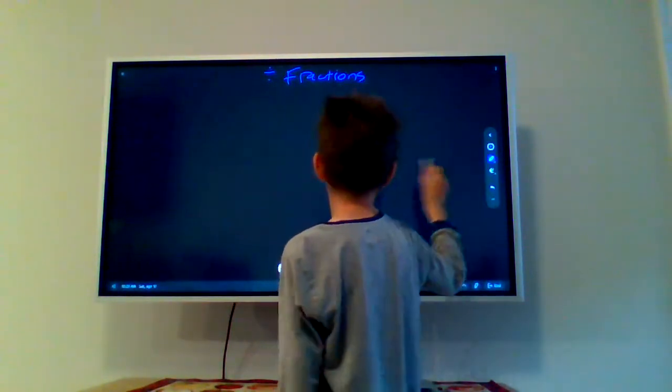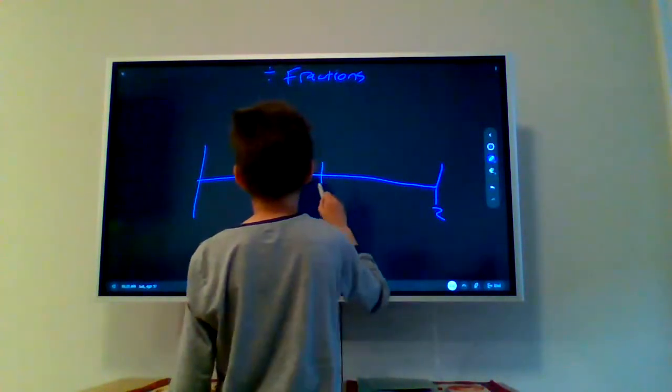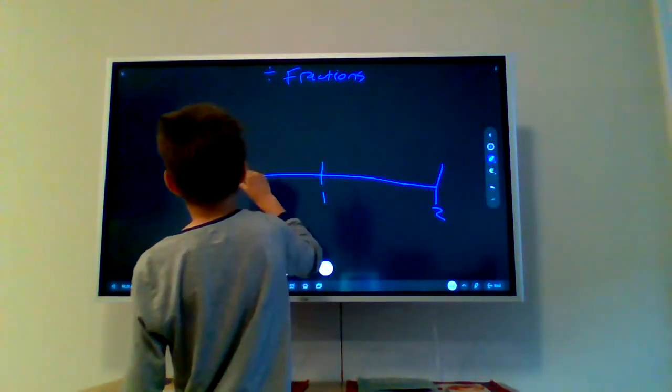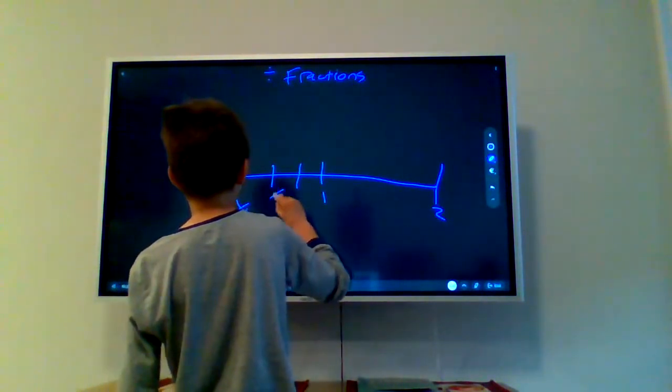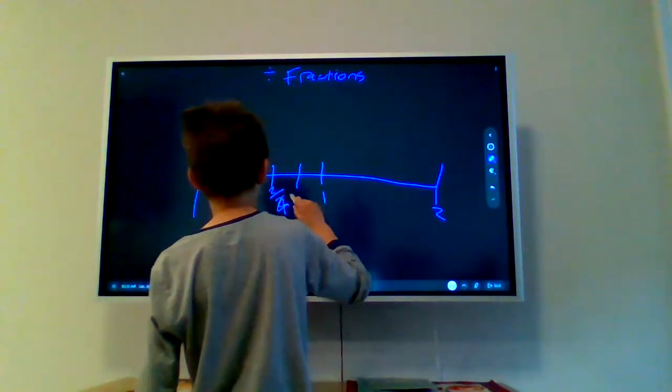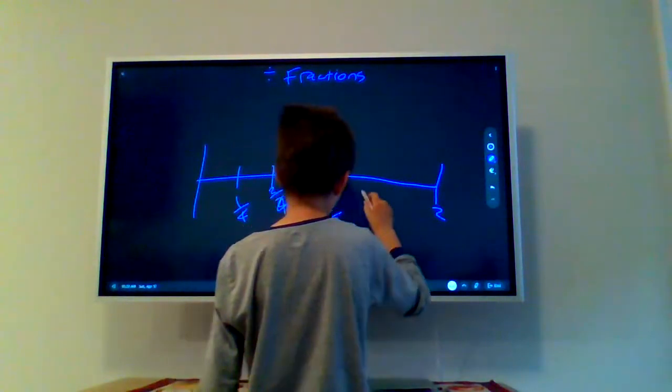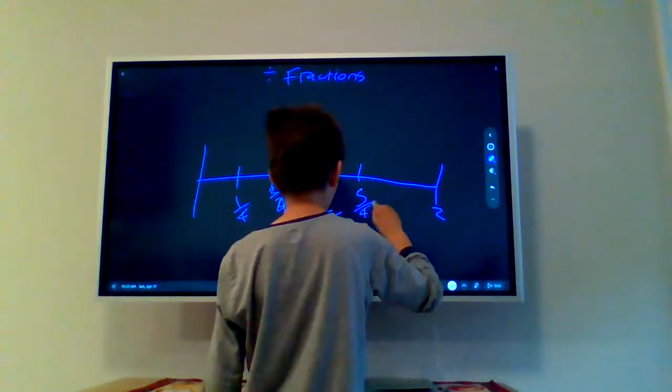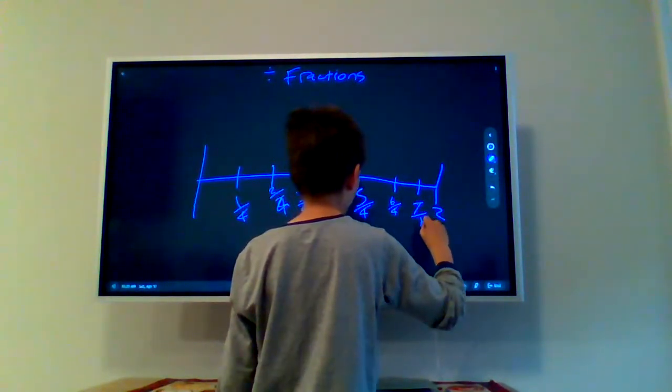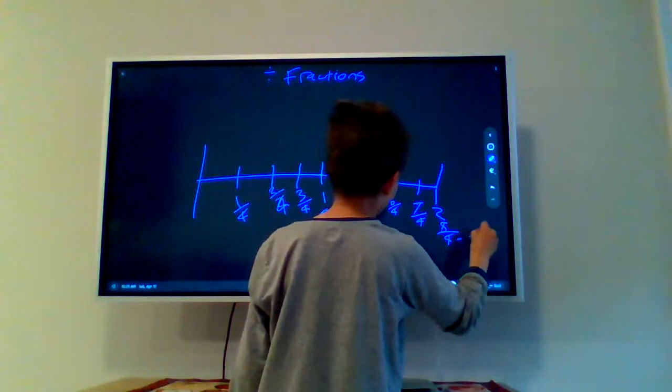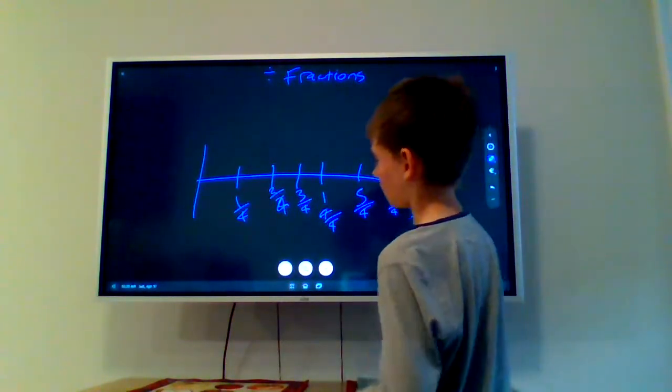If you have a number line, let's just say this is 2, this is 1, and 1, 2. Let's just say that was equal. This was 1/4, this was 2/4, this was 3/4, this was 4/4 which is 1, this was 5/4, this was 6/4, this was 7/4, this was 8/4, and so on. I know they're not equal. They should be equal, but they're not, because I'm very bad at drawing.